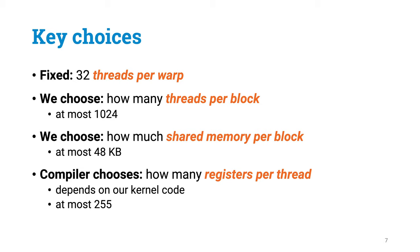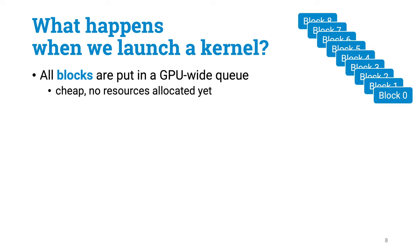So now we know all we need to know about our kernel. We have chosen how many threads there are per block, which directly determines how many warps there are per block. We have chosen how much shared memory to allocate per block, and the compiler has decided how many registers are used per thread. What happens when we launch the kernel? All blocks are first put in a queue — no resources are allocated for them yet, they just wait in the queue.